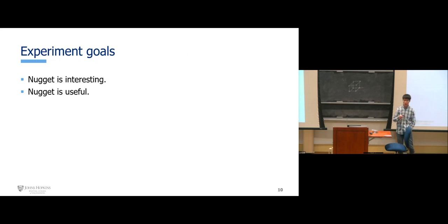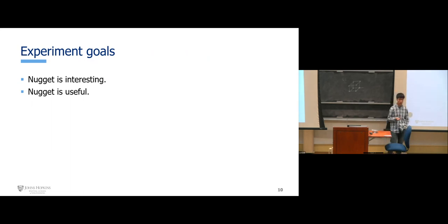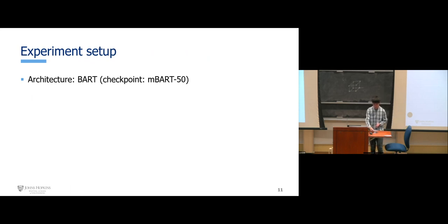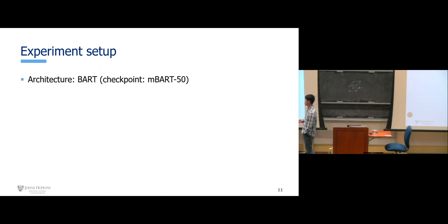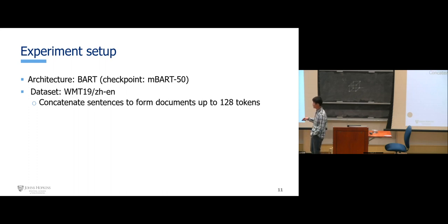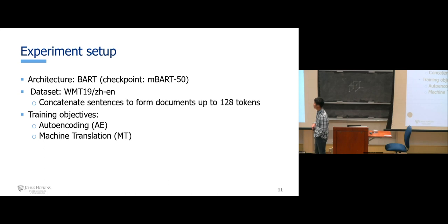For experiments, we use the architecture of BART, an encoder-decoder transformer. We did not train BART from scratch but instead fine-tuned from a checkpoint — MBART50, a many-to-many machine translation model. The dataset we use is WMT19, Chinese and English part. Because WMT19 sentences are very short, we concatenate sentences to form documents up to 128 tokens. The training objective is autoencoding — using English for both input and output — or machine translation, using English as input and Chinese as output.